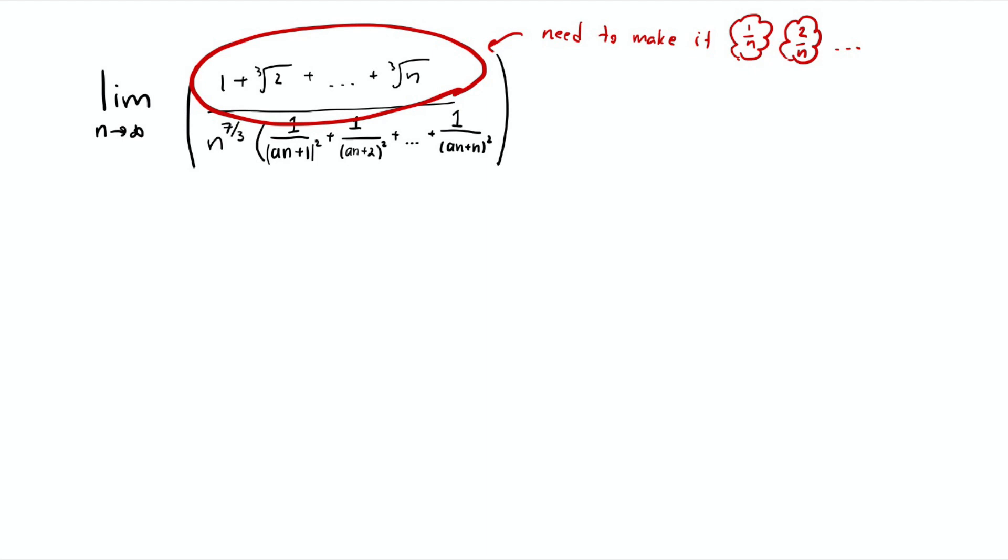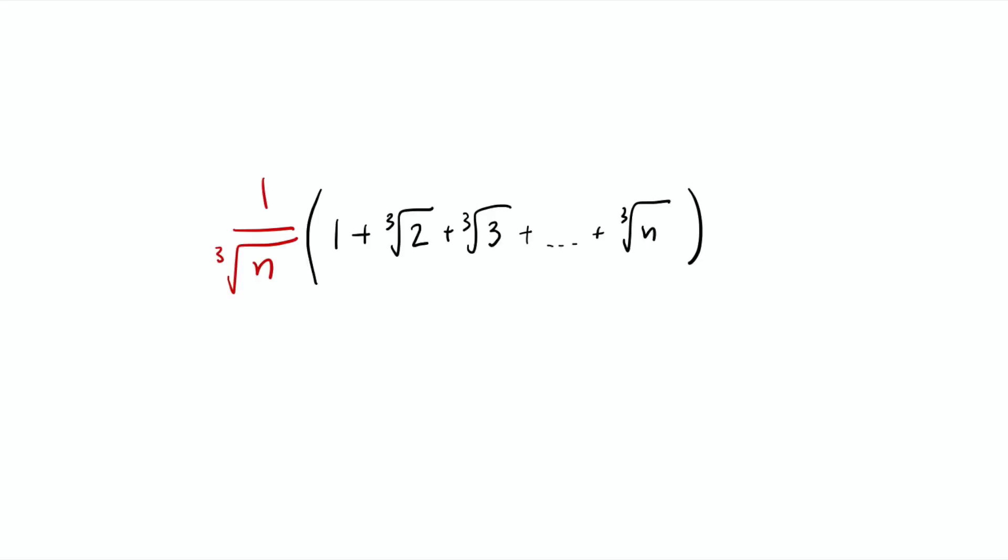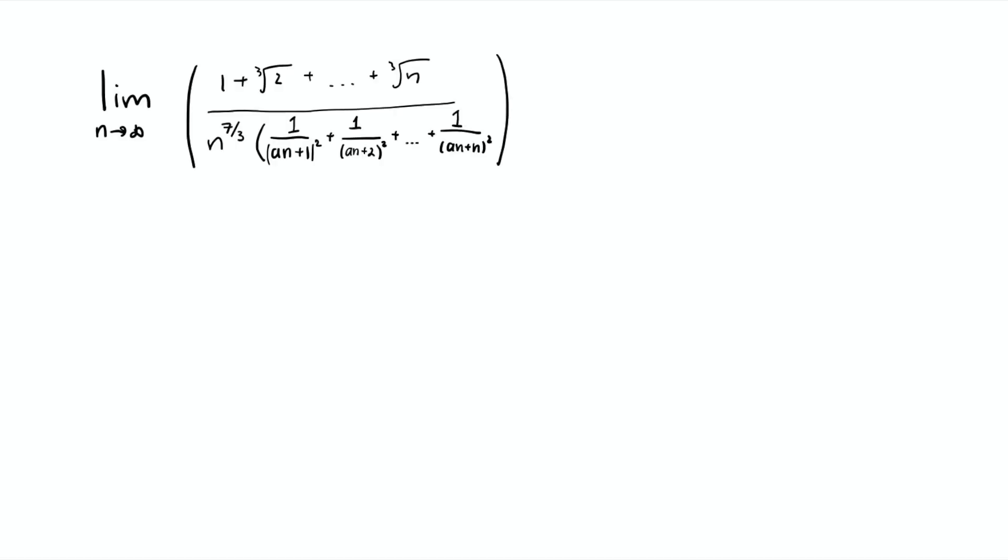With that in mind, let's convert all the sums into integrals. Keep in mind that we want to see the same pattern where inside is 1 over n, 2 over n, 3 over n, and so on. Look at the problem and see the numerator. We don't have 1 over n, 2 over n, 3 over n - we have 1, 2, 3, 4, all the way to n in cube root. In order to make that into 1 over n, 2 over n, we divide everything on top by cube root of n. So on top, if we divide cube root of n, then we have precisely what we want: cube root of 1 over n, cube root of 2 over n, cube root of 3 over n, all the way to cube root of n over n.